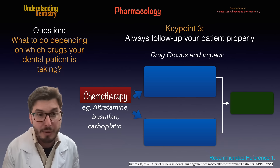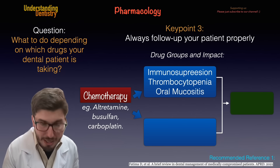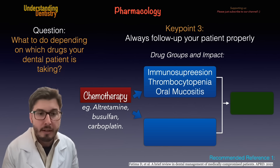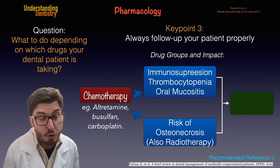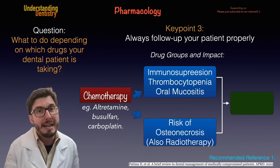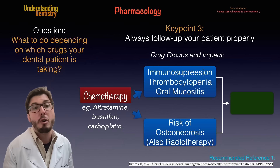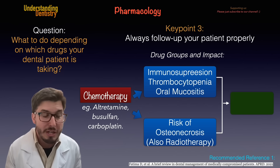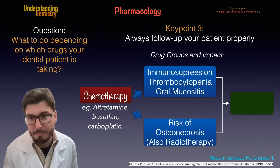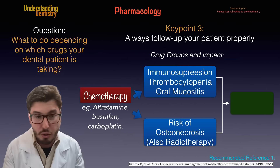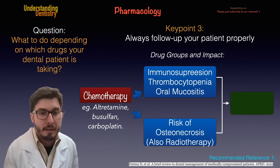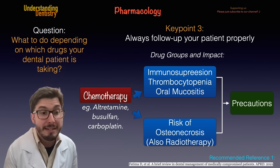Chemotherapy patients — something very important. They might have immunosuppression, lack of control of bleeding, and even oral mucositis. Don't forget that these patients might also be taking radiotherapy. We have a higher risk of osteonecrosis — chemotherapy and radiotherapy may lead to higher chances of osteonecrosis, just like patients taking bisphosphonates. Maybe they can start chemotherapy after dental extractions, and the physician would even refer the patient to you for extractions before chemotherapy or radiotherapy treatments start. That means precautions.